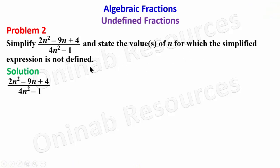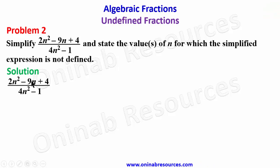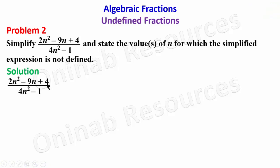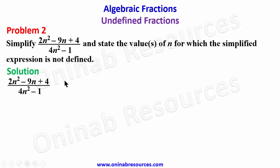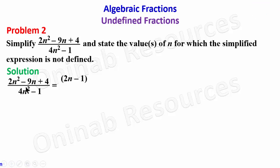To factorize the numerator, we multiply 2 by 4 to get 8, then look for two factors of 8 that sum to −9. Those factors are −8 and −1. Attaching −1 with 2n gives the first factor (2n − 1), and dividing −8 by 2 gives −4, so the second factor is (n − 4).